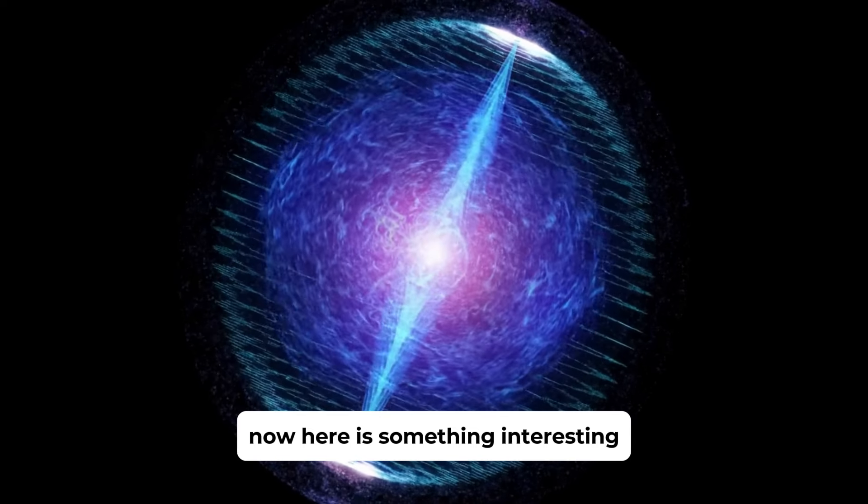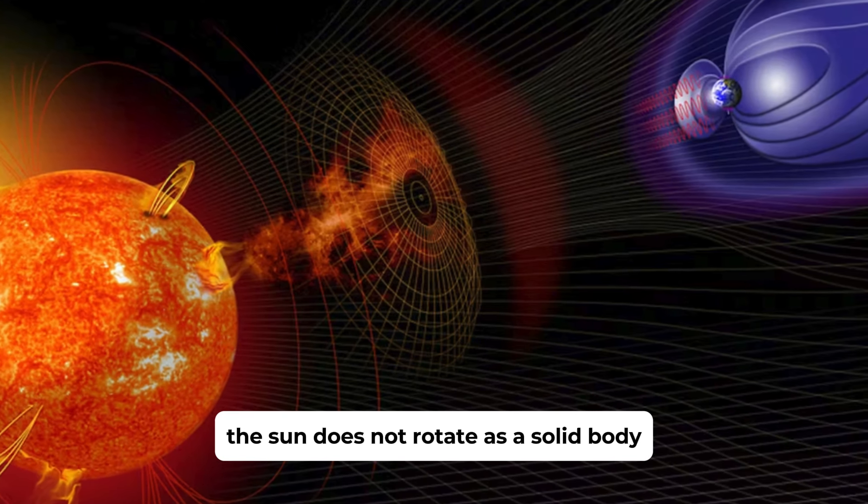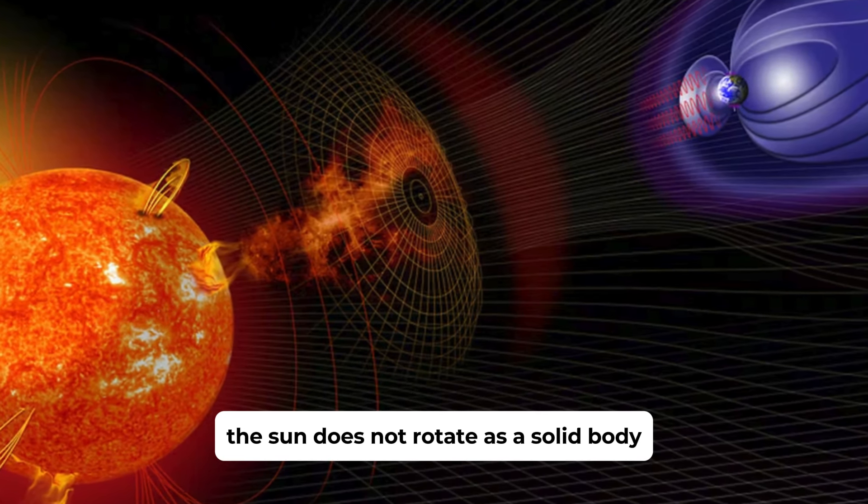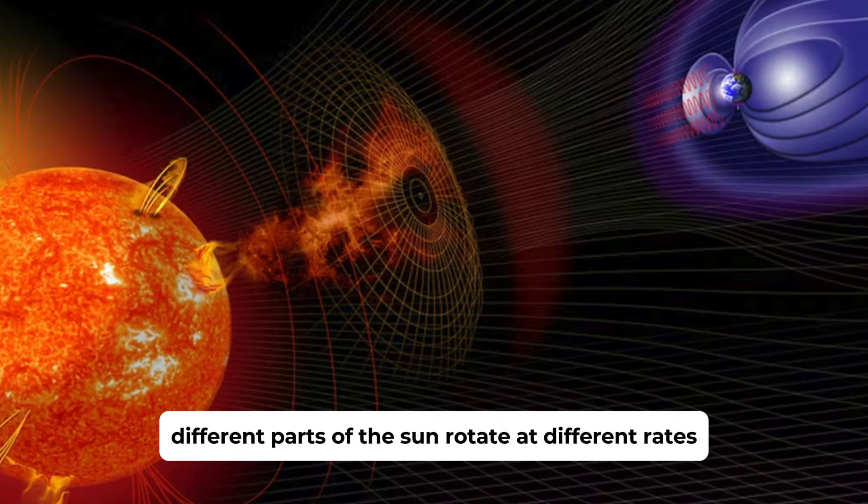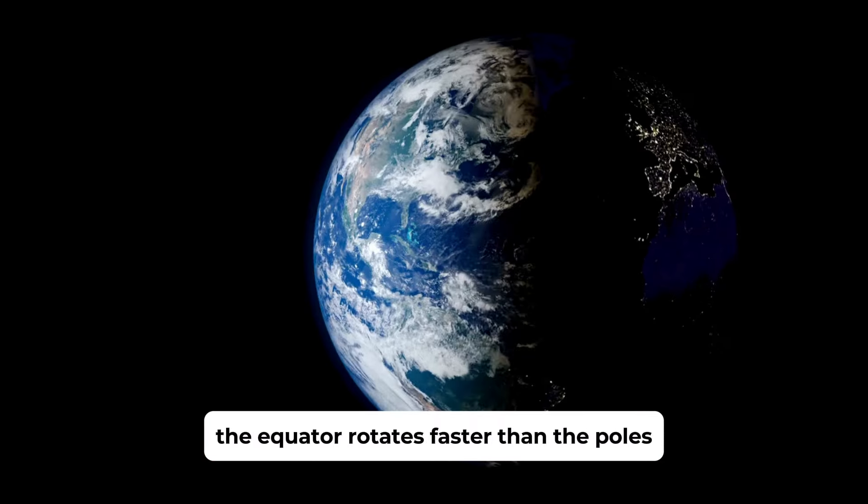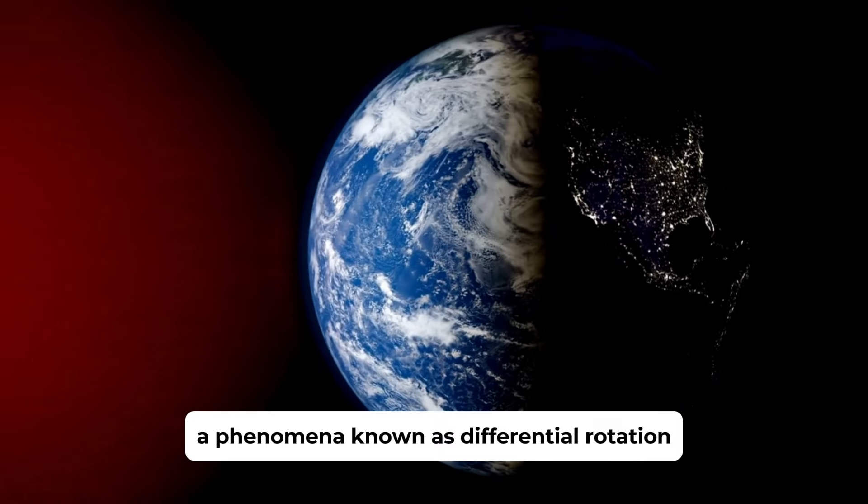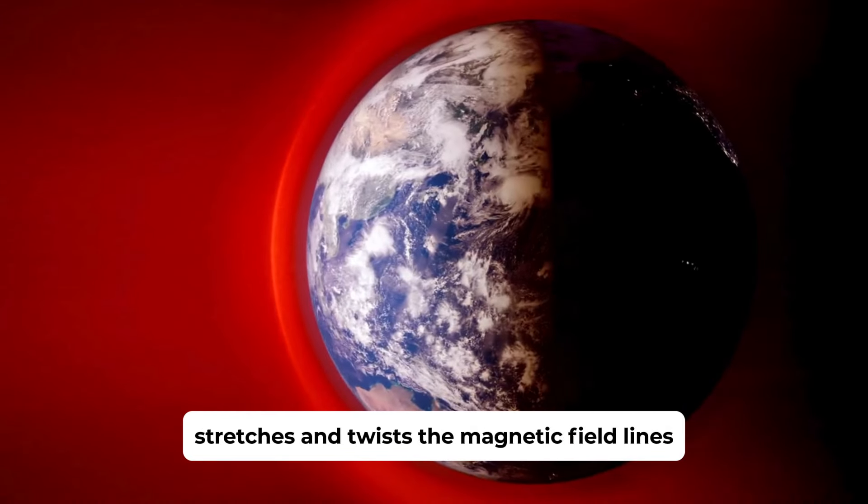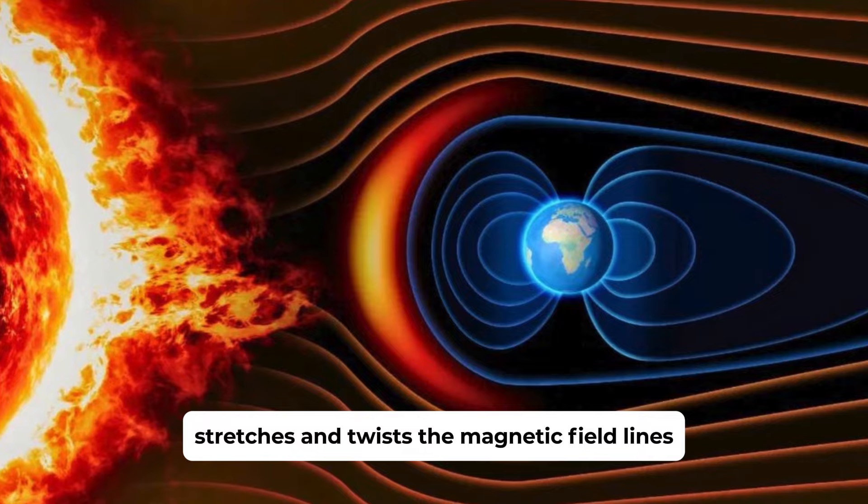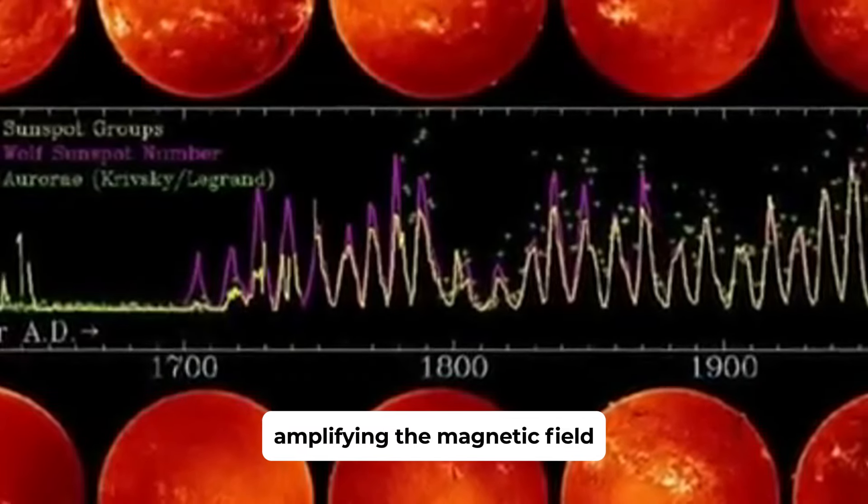Now, here is something interesting that you might not have known. The Sun does not rotate as a solid body. Instead, different parts of the Sun rotate at different rates. The equator rotates faster than the poles, a phenomenon known as differential rotation. This differential rotation stretches and twists the magnetic field lines, amplifying the magnetic field.